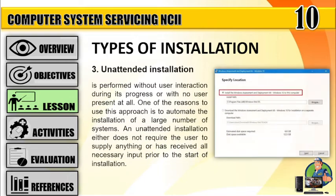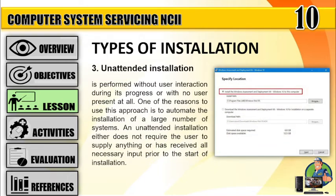Number 3: Unattended installation is performed without user interaction during its progress or with no user present at all. One of the reasons to use this approach is to automate the installation of a large number of systems. An unattended installation either does not require the user to supply anything or has received all necessary input prior to the start of installation.